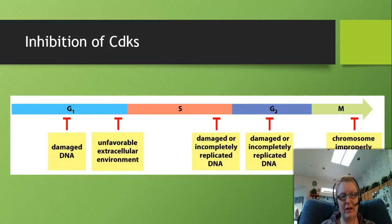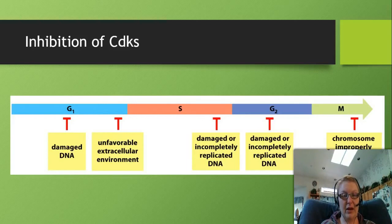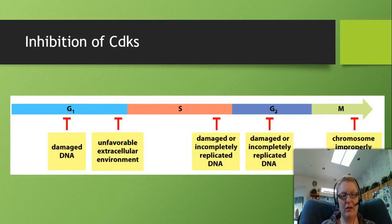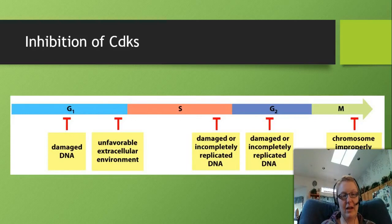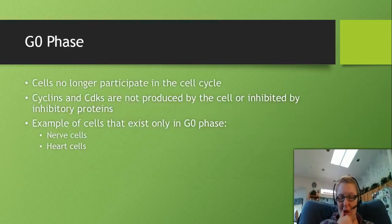Not only can the cell control how and when CDKs are activated, but it can also inhibit CDKs through a variety of inhibition signals. Things like damaged DNA or an unfavorable extracellular environment can cause inhibition signals. These inhibitor molecules bind to the CDK-cyclin complexes and either cause them to break down, prevent phosphorylation, or a variety of other mechanisms - preventing the cell from continuing through the cycle until conditions are favorable again. The cell is very invested in making sure we do not go through the cell cycle unless it is necessary and appropriate.